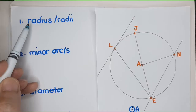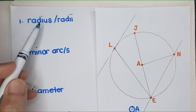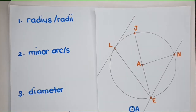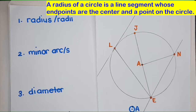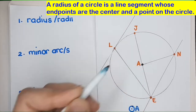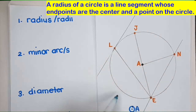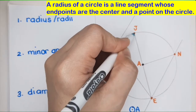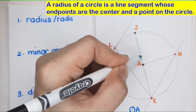Let's begin with Radius, or Radii. When Radius is asked, you give one example. When Radii, you give more than one — two or more. But what is a Radius of a Circle? A Radius of a Circle is a line segment whose endpoints are the center of the circle and a point on the circle. So let me give you a Radius.